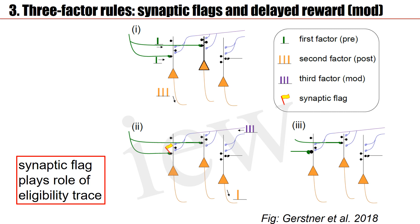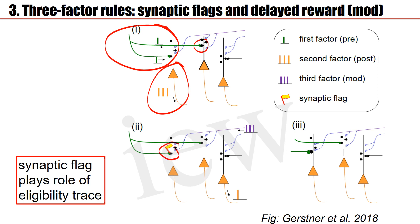Here is the idea illustrated. Presynaptic activity — the green neuron is active — and postsynaptic activity — this neuron is active. The green neuron also makes a contact where the postsynaptic cell is not active. Hence, it's only the synapse that has seen joint activity of pre- and postsynaptic neuron that sets an eligibility trace. The synaptic flag plays the role of the mathematical eligibility trace. If later a success signal — dopamine — is distributed all over the brain, then this one specific synapse is increased, whereas other synapses that only receive the success signal will not change.